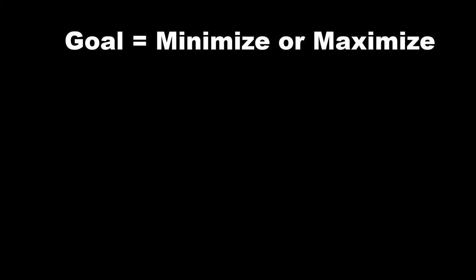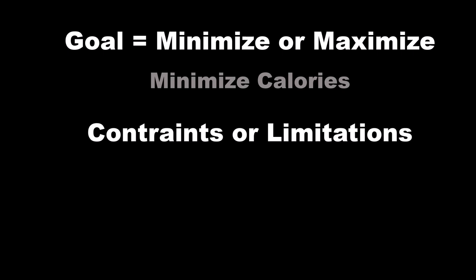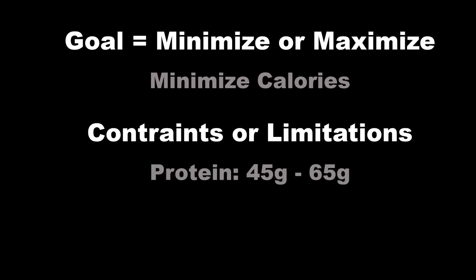These linear optimization problems are usually set up like this: there's something that you're trying to minimize or maximize — in this case it is minimizing calories. And there's a series of limitations or constraints that don't allow you to do that optimally, and you have to stay within those constraints. For example, we have to stay within our protein bounds of 45 and 65 grams of protein, can't exceed a certain level of sugar, and a couple other nutrient constraints. Using linear algebra, we can set up a mathematical model for this situation and use math to find the optimal outcome staying within the constraints.